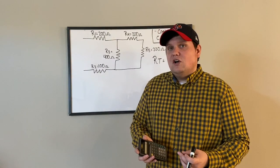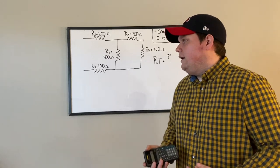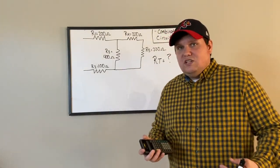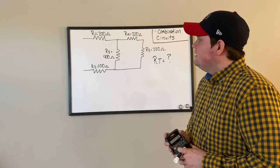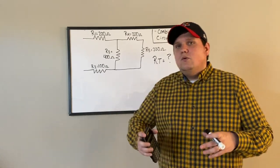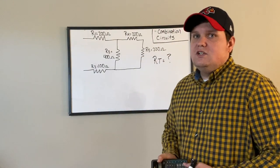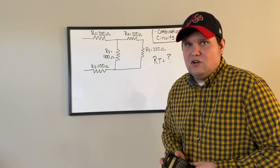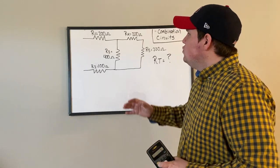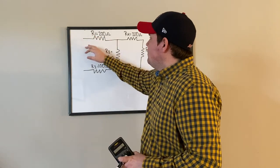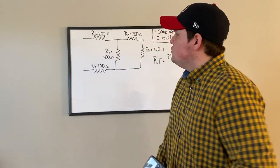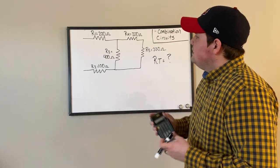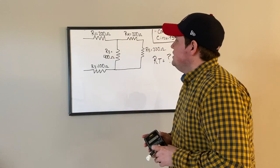Voltage in a series circuit will always add up to your total, because a series circuit is sometimes called a voltage divider circuit. The total voltage drops in a series portion will always add up to total. As far as resistance goes in a series circuit, total resistance is just the sum of all the resistors added together.